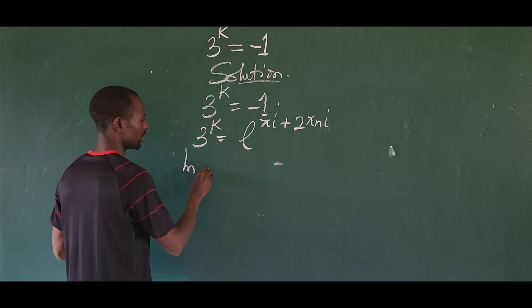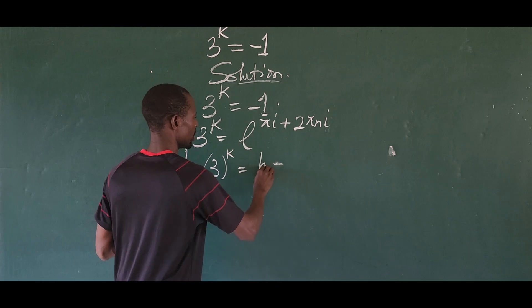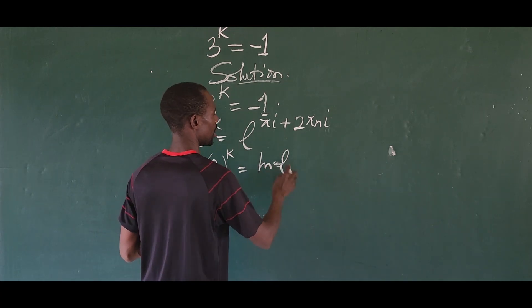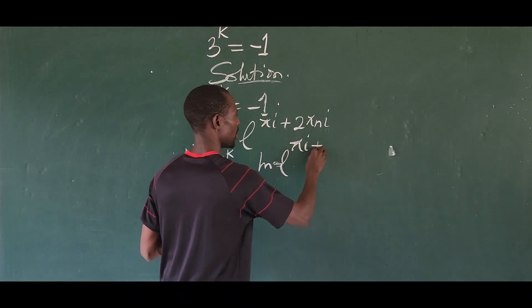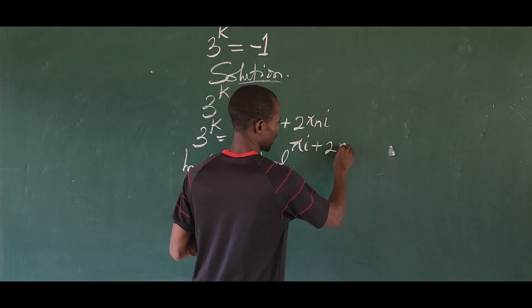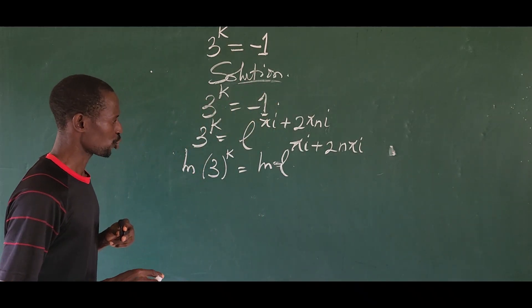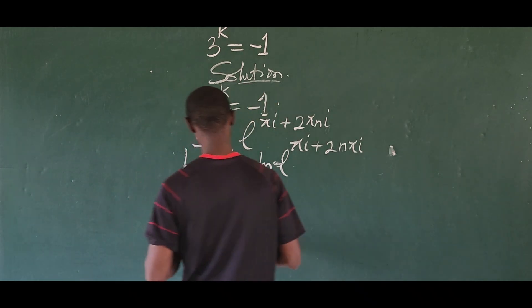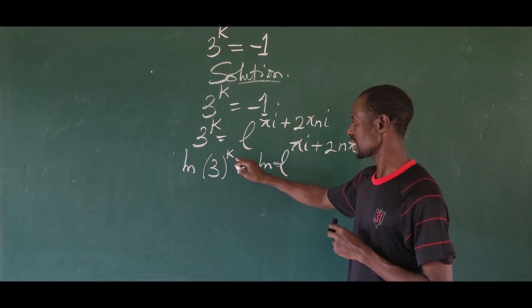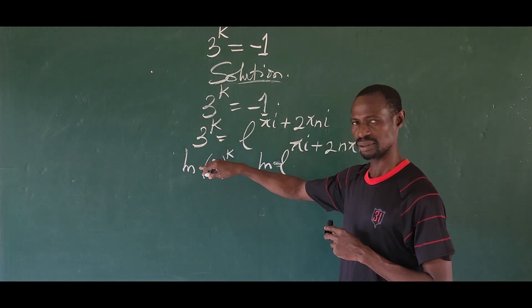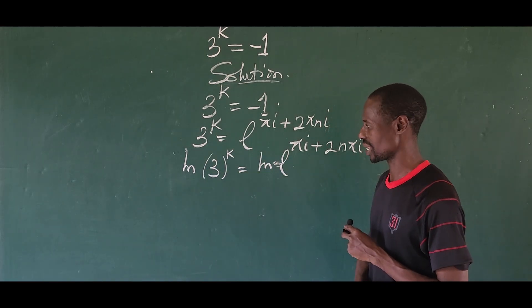So we have here ln of 3 raised to the power of k. This is equal to pi i plus 2n pi i. What happens here, we apply the power rule of logarithm, which says that we move this exponent to the other side. This comes down here.